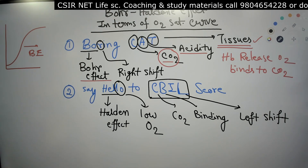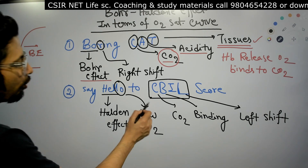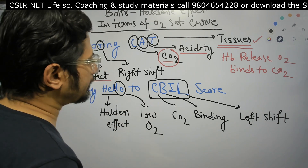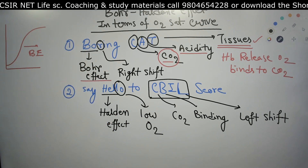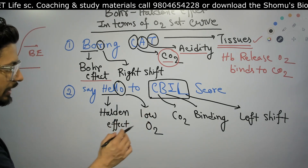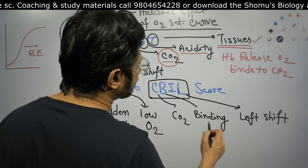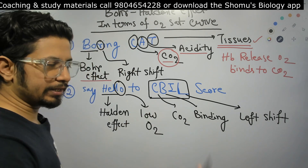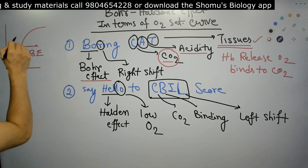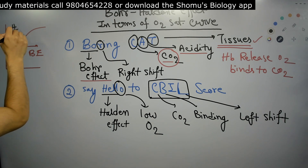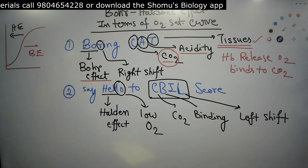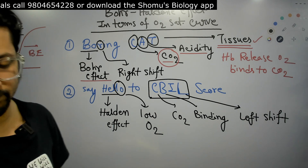In the Haldane effect, when there is low oxygen in the body tissues, the carbon dioxide's binding capability to hemoglobin increases, causing a left shift of the hemoglobin oxygen saturation curve. So the Haldane effect causes a left shift of the hemoglobin oxygen saturation curve.